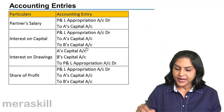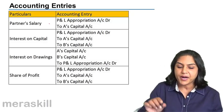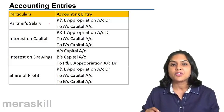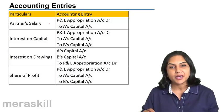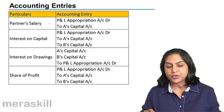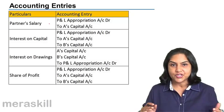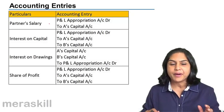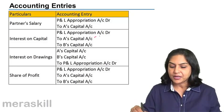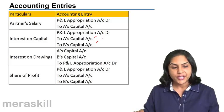What are the accounting entries? For partner's salary, we say: Profit and Loss Appropriation Account debit to A's capital account, B's capital account, C's capital account — whoever receives the salary. For interest on capital, again it is an interest to be paid by the partnership firm: Profit and Loss Appropriation Account debit to A's capital, B's capital, C's capital — whoever is entitled to the interest on capital.